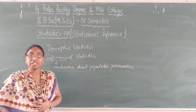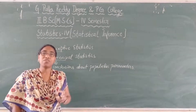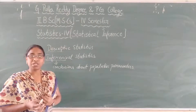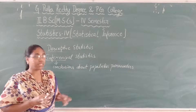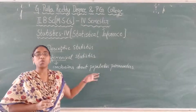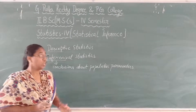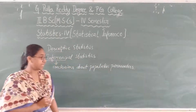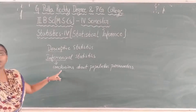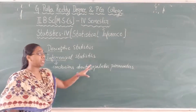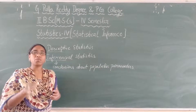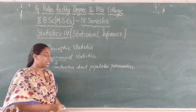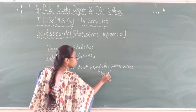We know what is the population — population means the group of individuals under study. Whatever elements you have under the study, all those elements together are known as the population. In the population, we have some constants, and those constants are termed as parameters. So inferential statistics means we are going to provide conclusions about the population parameters — whatever parameters exist in the population — by using the sample data.